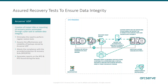One thing about recovery testing is that unfortunately it often gets put off and delayed because there are other emergencies — phone systems go down, networks go down, people lose data, the CEO drops his laptop. All those are going to take up your time. Assured Recovery gives you the ability to have automated testing in there so you always know that, as of that time, everything was good from a resource perspective.